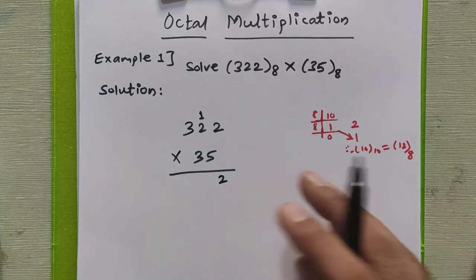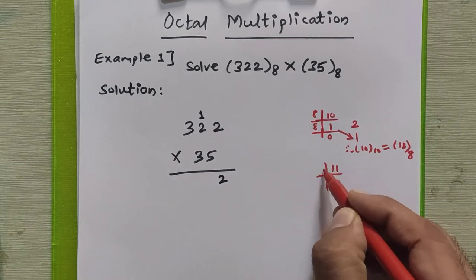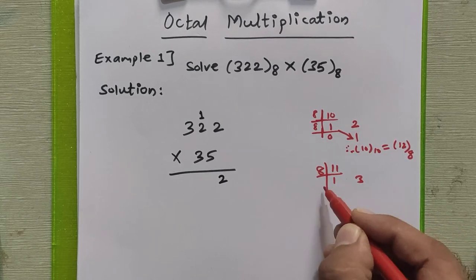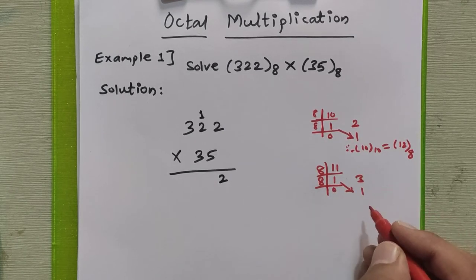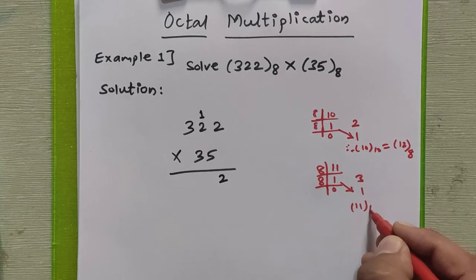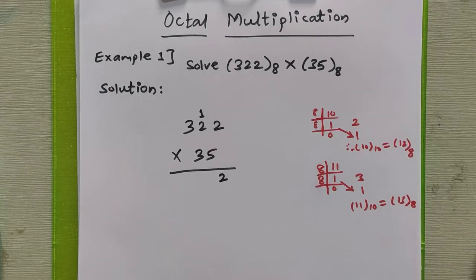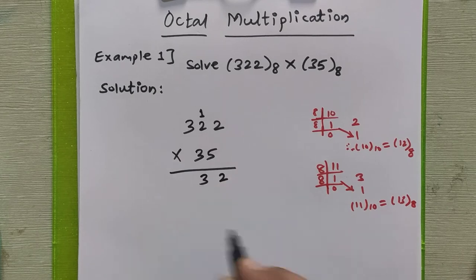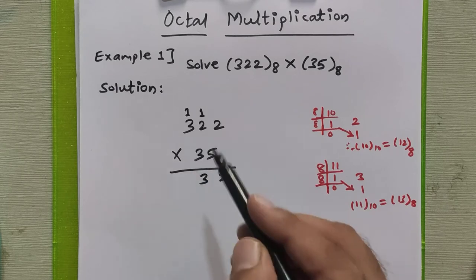To convert 11 decimal to octal: divide 11 by 8, quotient is 1 remainder 3; divide 1 by 8, quotient is 0 remainder 1. So 11 decimal equals 13 in octal. Our result is 13 — we write 3 here and carry 1 goes to the next step. Now we multiply 5 and 3: 5×3 is 15, plus carry 1 is 16.